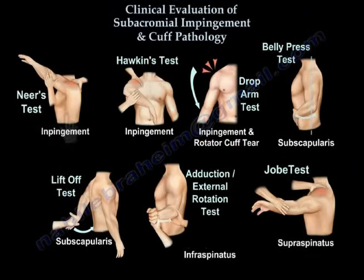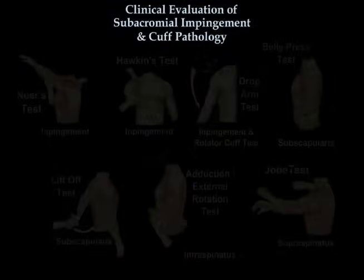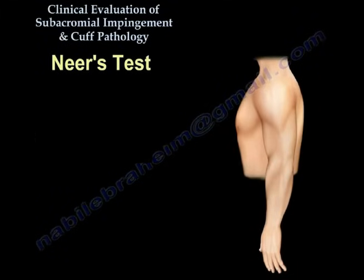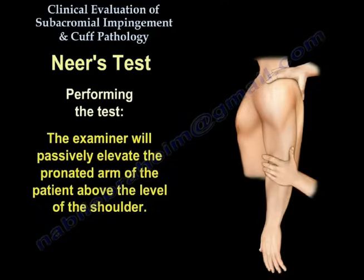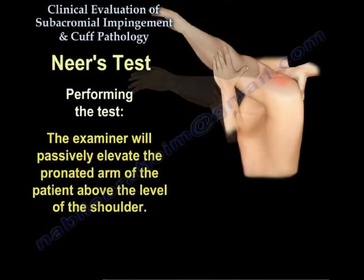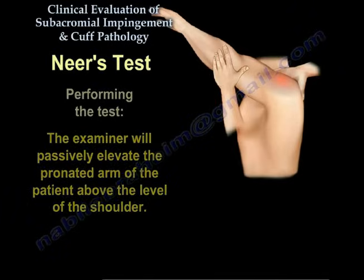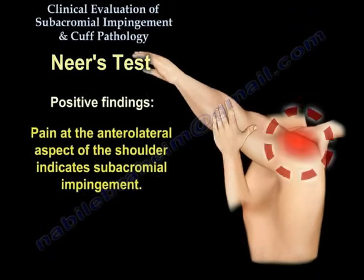We start with the Neer test. The patient is standing or sitting upright. The examiner will passively elevate the pronated arm of the patient above the level of the shoulder. Pain at the anterolateral aspect of the shoulder indicates subacromial impingement.